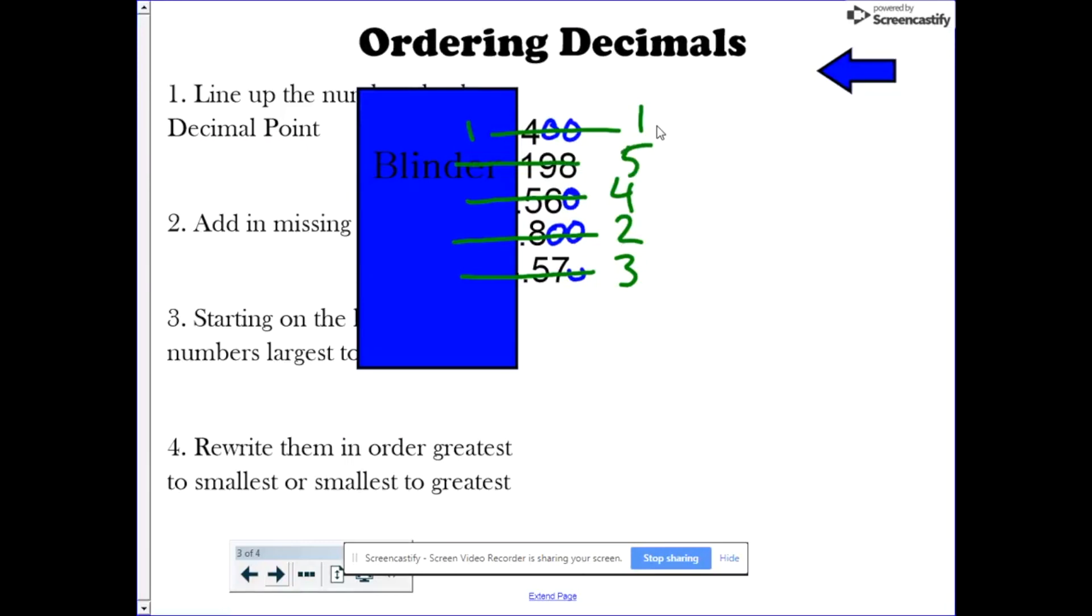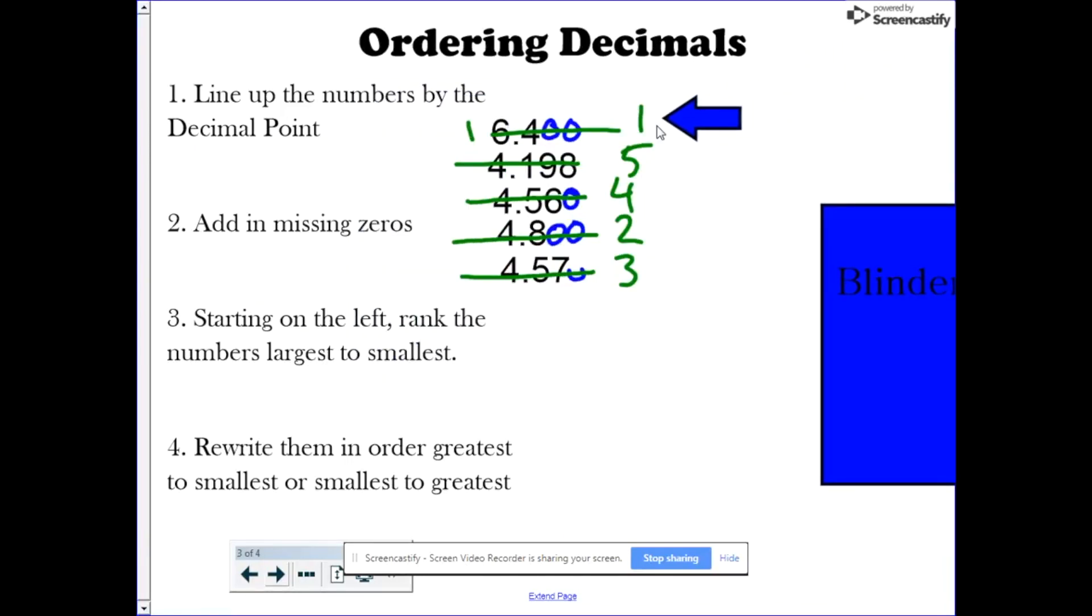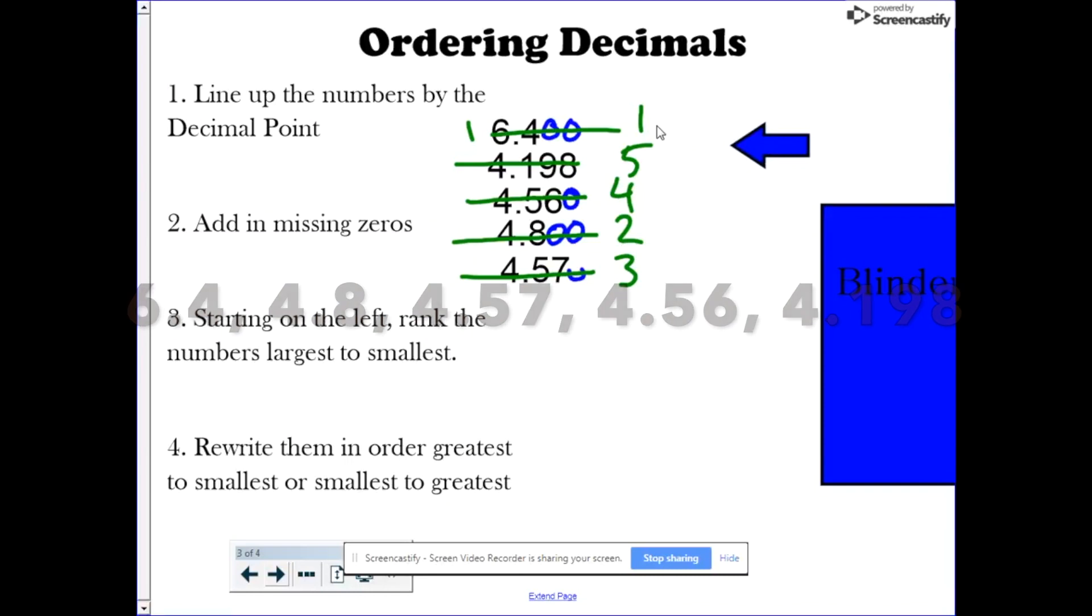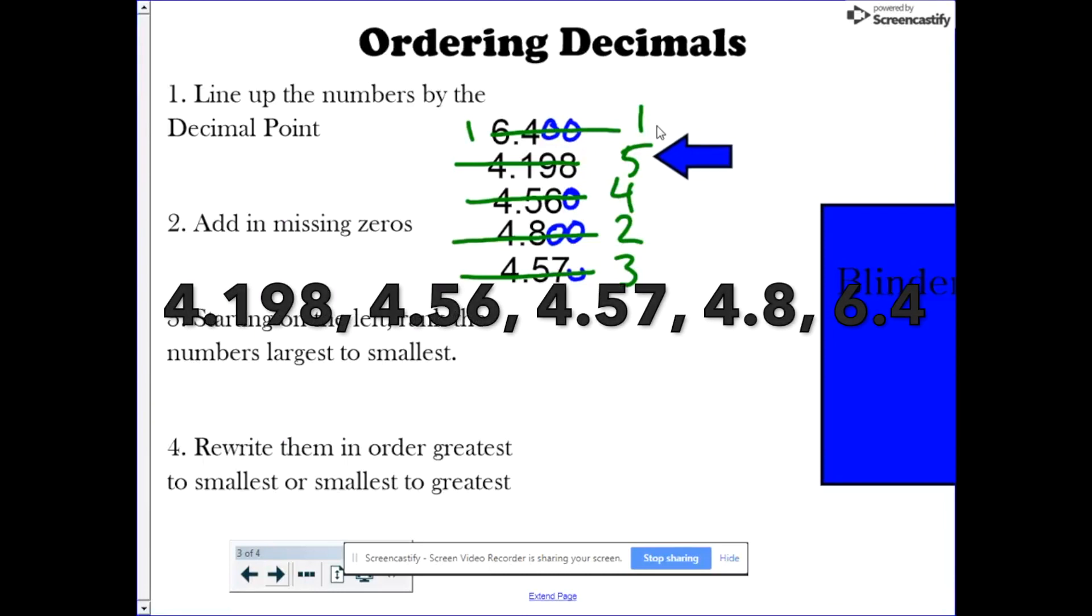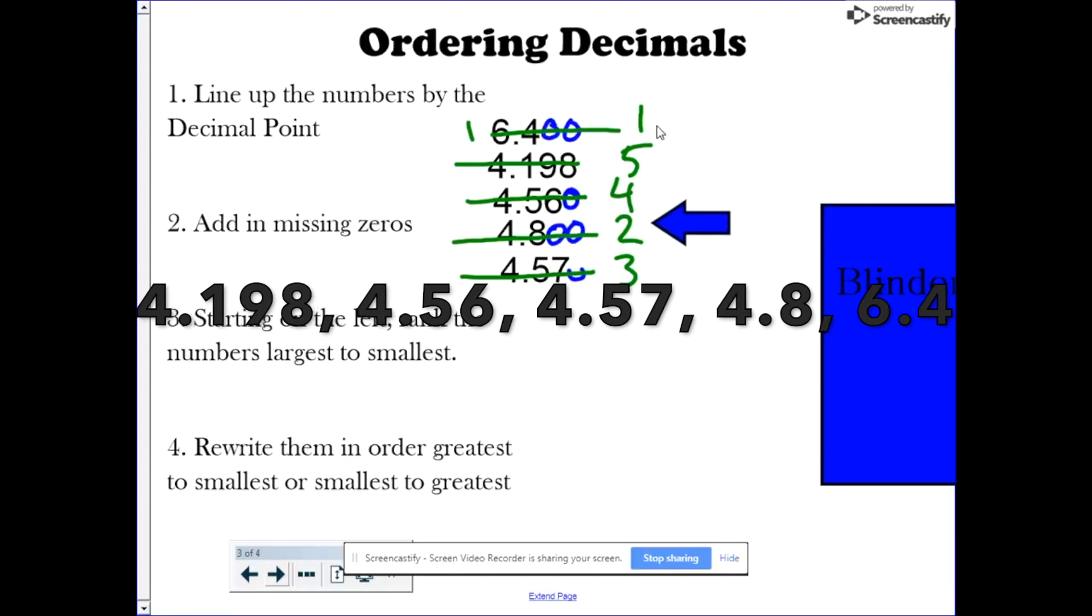Now, the fourth step is to rewrite the numbers in order from either greatest to least or least to greatest, depending on which way you're asked. If you are asked to write them from greatest to least, you simply write it in numeric order, starting with your 1, then 2, 3, 4, 5, or however many numbers that you had to order. If, however, it's asking you to order them from least to greatest, you simply go backwards. You start with your last ranked number, in this case, 5, and then go 5, 4, 3, 2, 1.